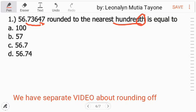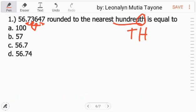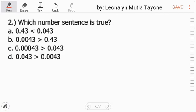Kapag may 'th' after sa decimal place, itong seven yan yung tenths, ito yung hundredths. So dito ka mag-focus, ito yung rounding place natin, ang three. Tapos tingnan mo yung right side ng three: six. Six is more than five. Kapag equal to five or more than five, mag-add up tayo sa rounding place natin. So ang three magiging four, so magiging 56.74. Ang sagot dito ay letter D.